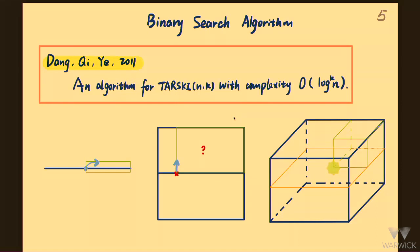For the 1D Tarski problem, we just do binary search: we query the middle point, and if it goes right, by monotonicity we know there must be a fixed point on the right. The first non-trivial case is k=2. In the 2D grid, the algorithm will fix the middle line — fix x_2 to be n/2 — and ignore the second-dimensional information. The line becomes a 1D Tarski and we use binary search to find a fixed point for only the first dimension.